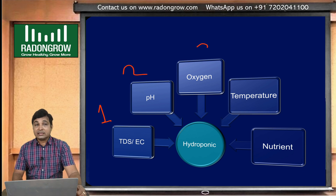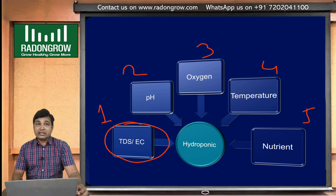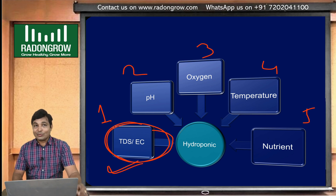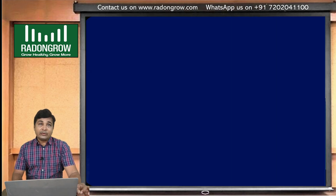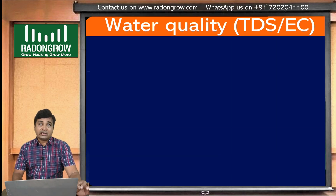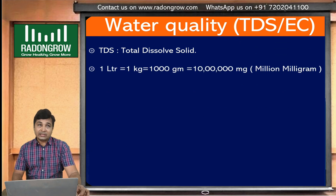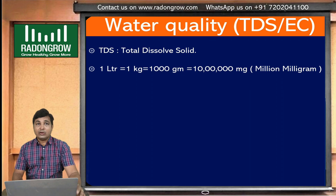Today we will discuss about TDS or EC. What is TDS and what is EC? TDS means total dissolved solids. In 1 liter of pure water, TDS is always 0 and EC is always 0. First we will understand TDS, then we will go on to EC.